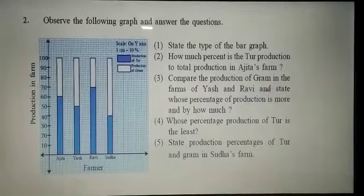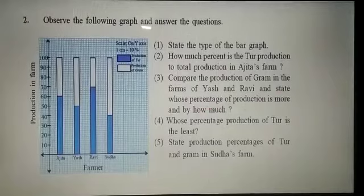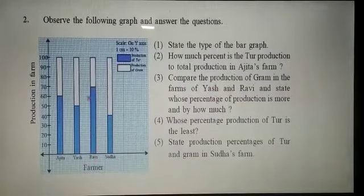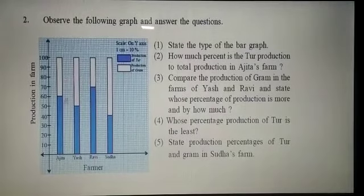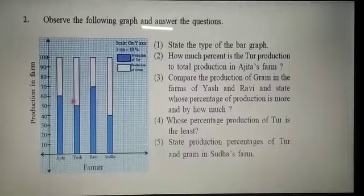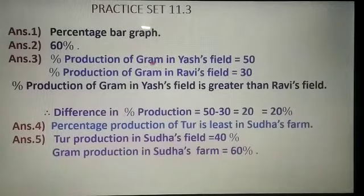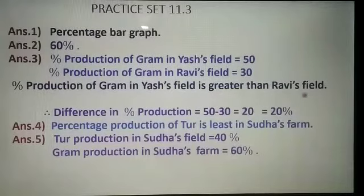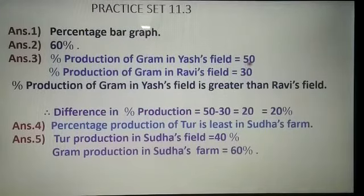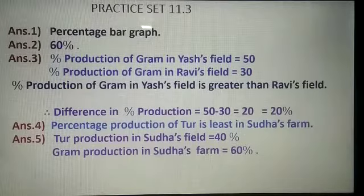Question 3: Compare the production of gram in the farms of Yash and Ravi and state whose percentage of production is more and by how much. Production of gram is shown in white color. Percentage production of gram in Yash's field is 50% and in Ravi's field is 30%. Therefore Yash's gram production is greater, and the difference is 50 minus 30 = 20%. Yash's field has 20% more gram production.